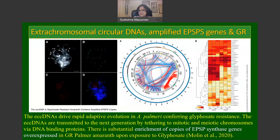The eccDNAs are transmitted to the next generation by tethering to mitotic and meiotic chromosomes via DNA-binding proteins like zinc finger proteins. On the left, a figure shows various eccDNAs associated with a pachytene preparation stained with DAPI, where white arrowheads indicate the positions of different eccDNAs. This result is confirmed in panel D, which shows a fluorescence in situ hybridization (FISH) image of eccDNA and EPSP synthase genes.